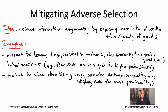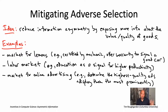So those are the basics of adverse selection — what it is, and many examples. We've mostly focused on the traditional examples: the market for lemons, the market for health insurance, the labor market. We did talk about the market for online advertising, which is a bit more in our overarching narrative of understanding the technology platforms that we use every day.